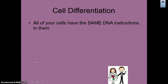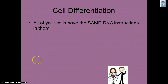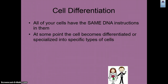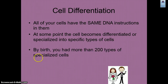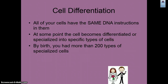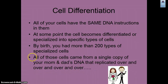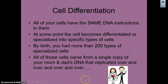In cell differentiation, all of your cells have the same DNA. During development of the embryo, cell differentiation occurs and special types of cells are created. By birth, you had more than 200 types of specialized cells, and all those cells came from a single copy — which came from your mom and your dad.